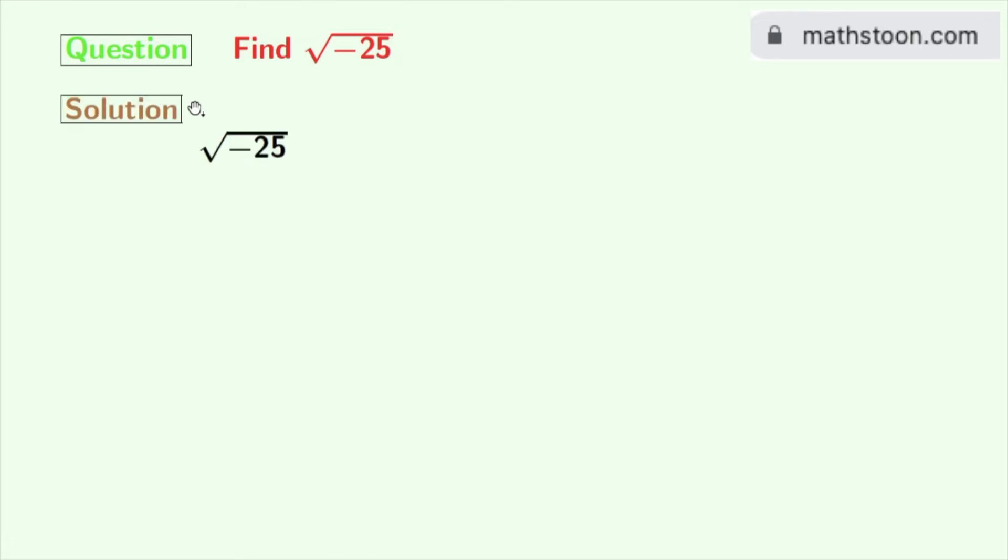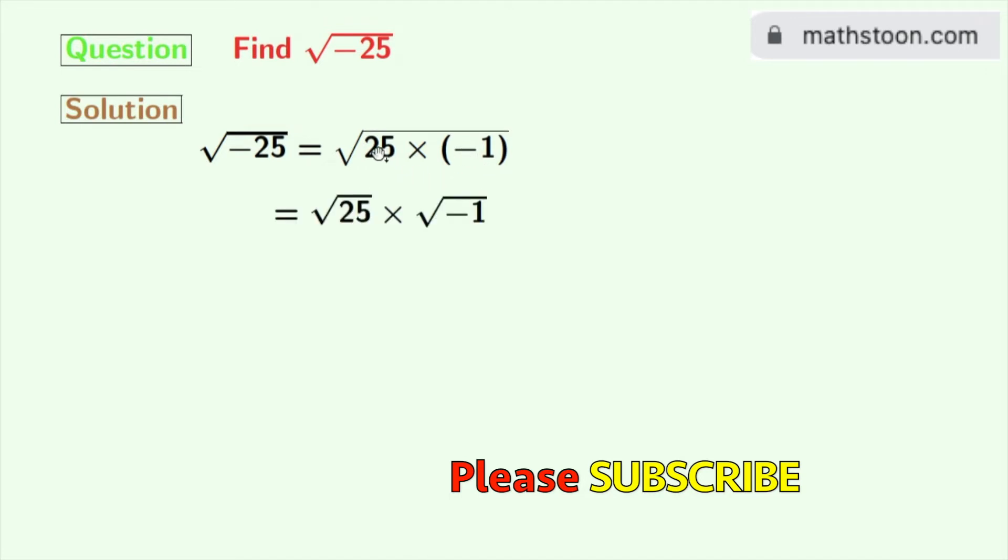This is square root of minus 25. Now we will rewrite this as square root of 25 times minus 1. Now again we can rewrite this as square root of 25 times square root of minus 1.